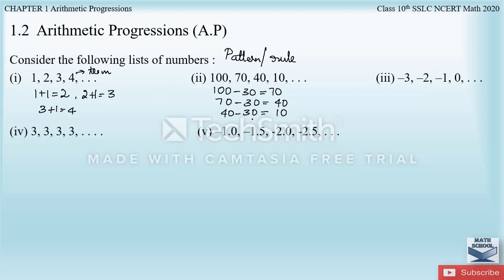In the next series, each term is obtained by adding 1 to the preceding term. Starting from minus 3, adding plus 1 gives minus 2; adding plus 1 again gives minus 1; and adding plus 1 to minus 1 gives 0. So the fixed number added here is 1.